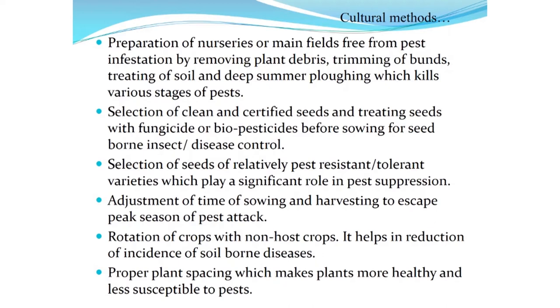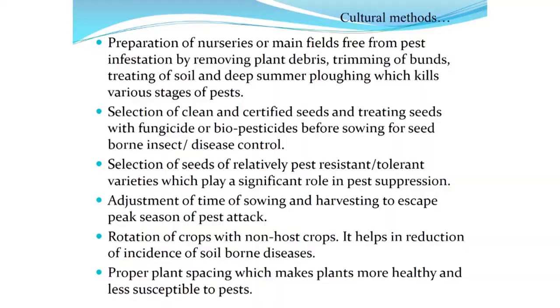There are two types of inputs: monetary inputs where the farmer spends money, and non-monetary inputs where he spends his knowledge. Selection of clean and certified seeds is a non-monetary input — the farmer applies knowledge about which seed is resistant to the particular insect pest prevailing in that area. Seeds must be treated with fungicides or biopesticides before sowing; systemic insecticides enter the seed and during germination move into the shoot and root system, controlling sucking insects for up to three to four weeks. Selection of pest-resistant or tolerant varieties plays a significant role in pest suppression.